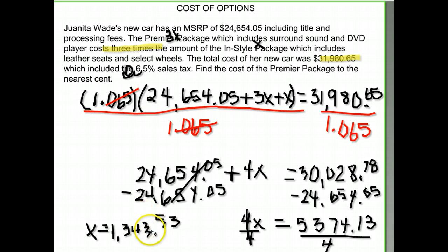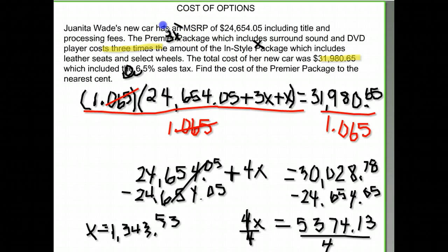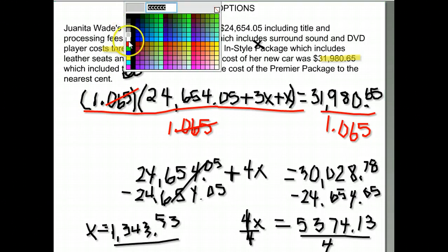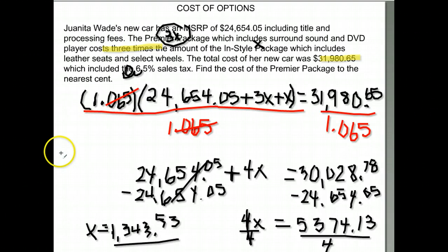Now I go back and check what X stood for — X was the in-style package. But the question asked for the cost of the premier package, which is three times X. So I take one thousand three hundred forty three dollars and fifty three cents and multiply by three. The final answer is four thousand thirty dollars and fifty nine cents.